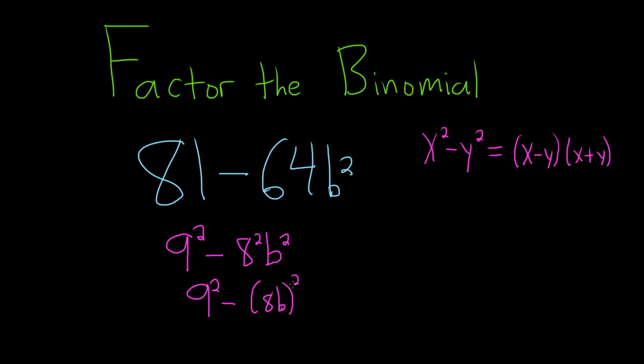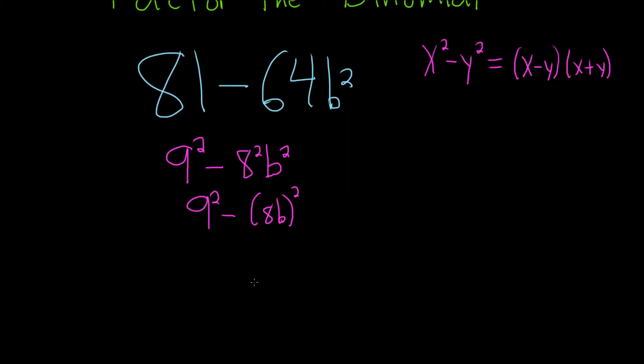If you think about it, if you go backwards, you end up squaring the 8 and the b, so you get the same thing. Now we can apply the formula. Our x here is equal to 9, and our y here is equal to 8b.